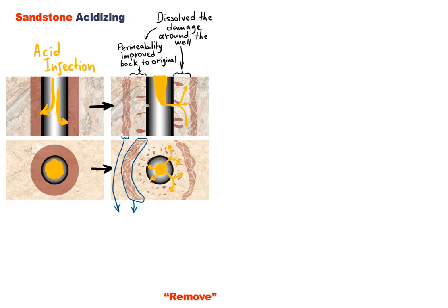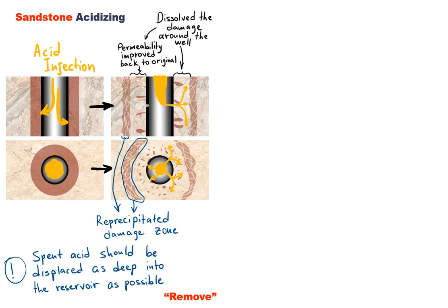It is also important to emphasize that some of the damaging material will precipitate out of the acid solution once this acid is spent and is being pushed deeper into the formation. The further we displace this damaging precipitation, the less effect it will have on the production. If the acidizing treatment is designed properly, then this deeper damage will not have any significant effect on production and we will observe a dramatic flow rate increase.